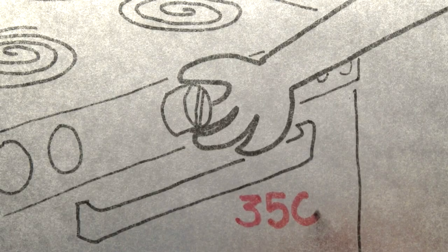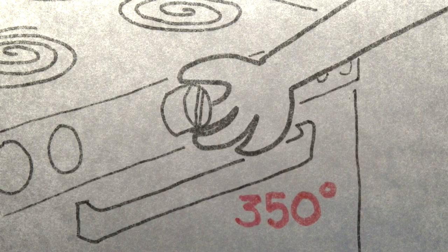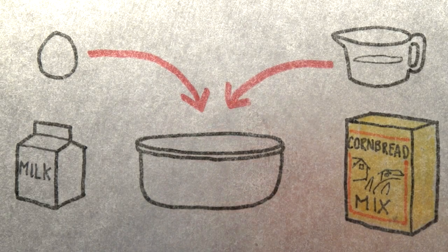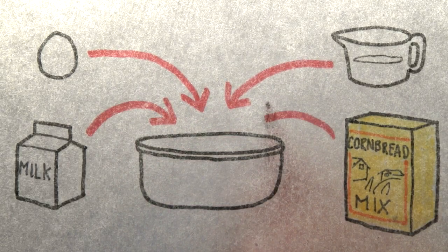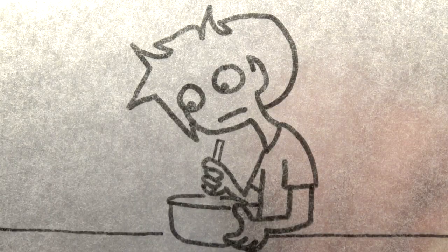Back to the cornbread. First, you preheat the oven to 350 degrees, and then beat the egg, oil, and milk in a large mixing bowl. Then, put in the cornbread mix, taking care not to over mix it.